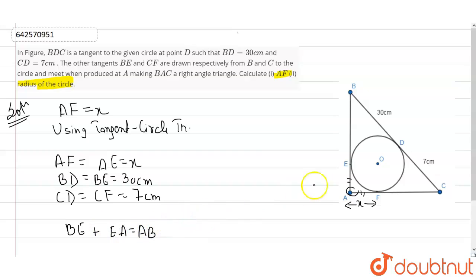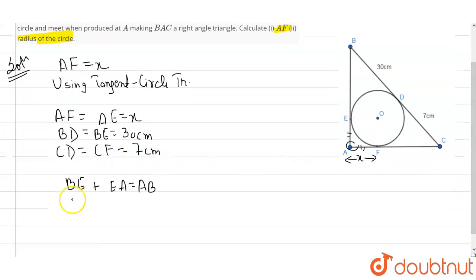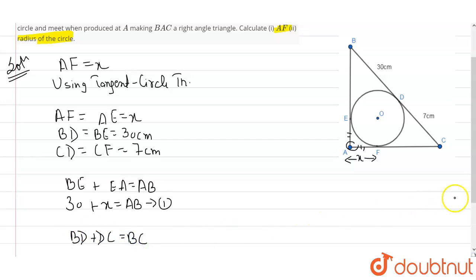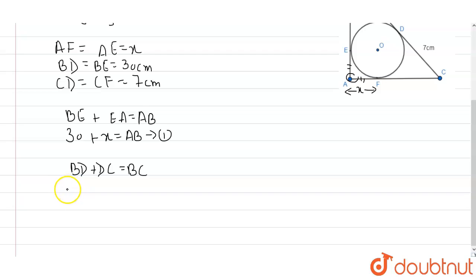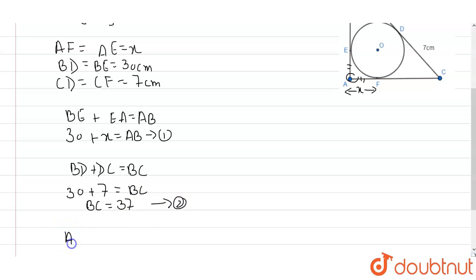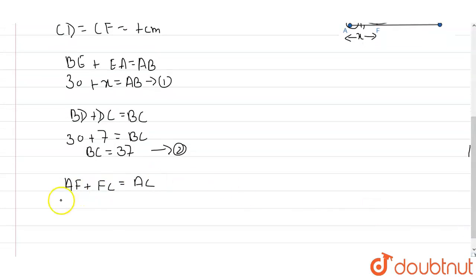Now we set up three equations. First: BE plus EA equals AB, so 30 plus x equals AB. Second: BD plus DC equals BC, so 30 plus 7 equals 37, meaning BC equals 37. Third: AF plus FC equals AC, so x plus 7 equals AC.